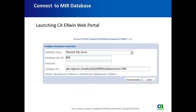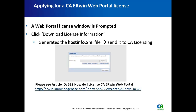The first time you launch CAA Erwin Web Portal, you will see a connection dialog for the MER database. Choose the database type — either Oracle or SQL Server — depending on which database you selected, enter the database user and password you created, provide the database URL, and click the 'Test Connection' button. Once connected, a web portal license window will appear. At this box, click 'Download Licensing Information' to generate a hostinfo.xml file.